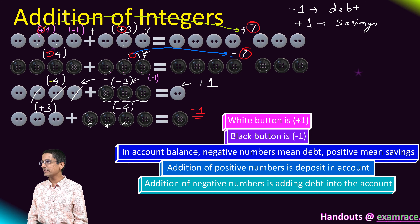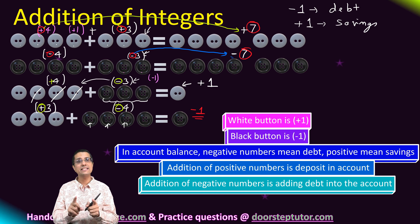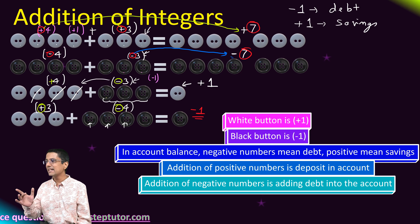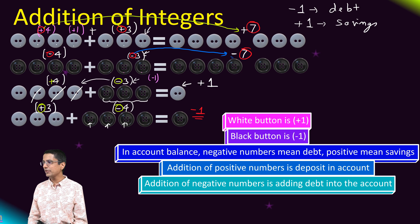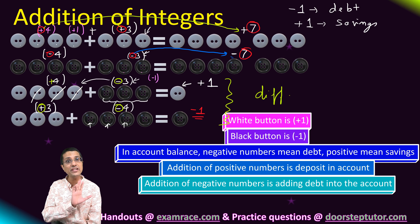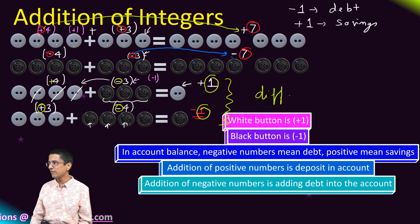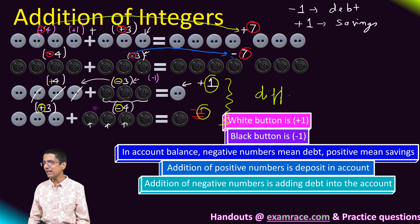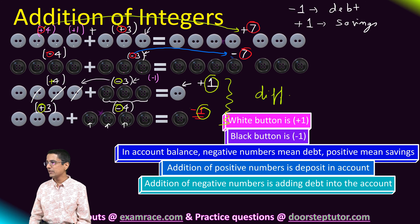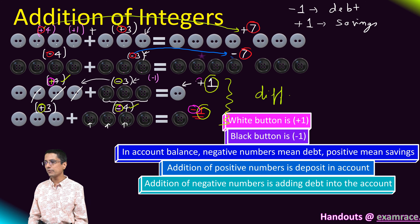If the signs of the two operands are different — for example, plus four and minus three, or plus three and minus four — we subtract the two operands and take the difference as the magnitude. In both cases the difference is four minus three, which is one. The sign we use is that of the larger magnitude operand, which is four. So we take the sign of four in each case.